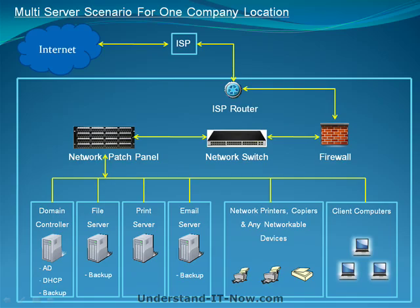The third scenario — multi-server at one company location — is the ideal network hardware setup for small business. Like the previous diagrams, you have your ISP providing internet services to the ISP router at the company location, which connects to your firewall, then to the network switch, then to the patch panel, which connects all networkable devices throughout the office.